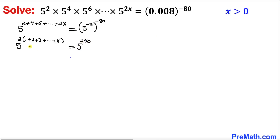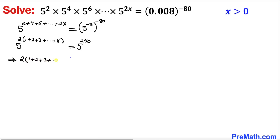We can see that on both sides our bases are the same — that is 5. So we can equate our exponents. Therefore we can write: 2 times the quantity 1 plus 2 plus 3 plus all the way to x equals 240.